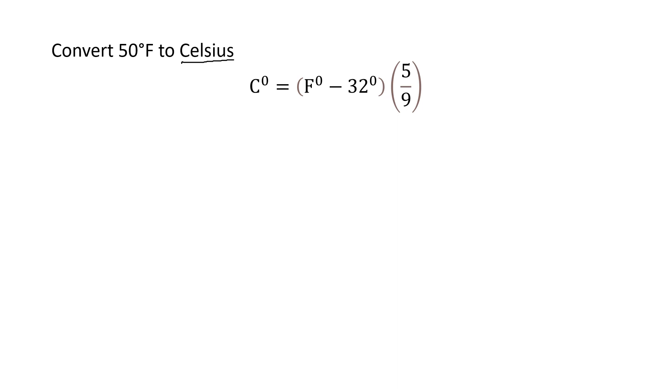All right. So we are told to convert 50 degrees Fahrenheit. So this is what we're going to use for F. We're going to just plug that into our formula. And then we just solve this. Make sure you use order of operations. So inside my parentheses first, 50 minus 32 is 18. And then 18 times five over nine simplifies to 10 degrees.